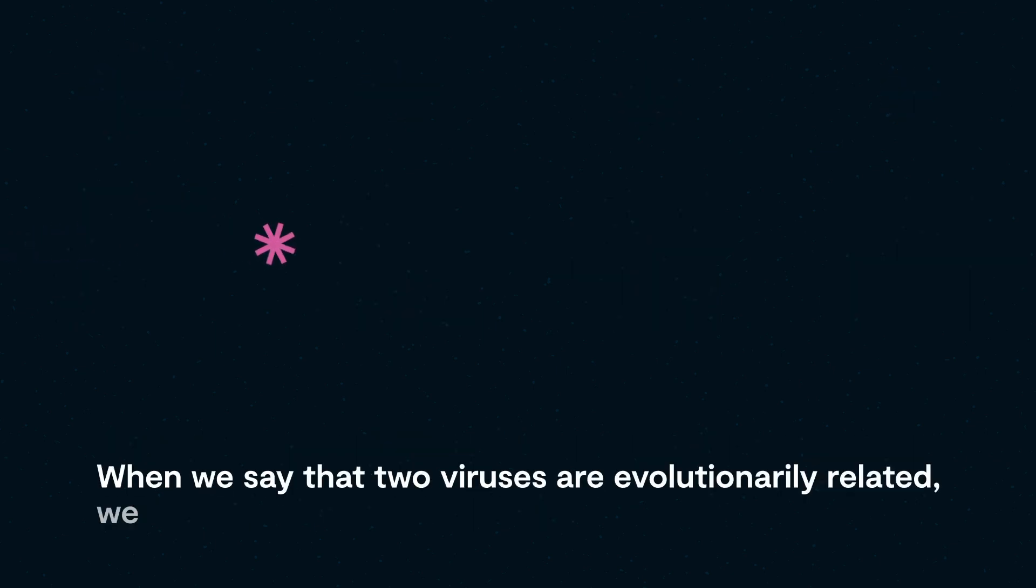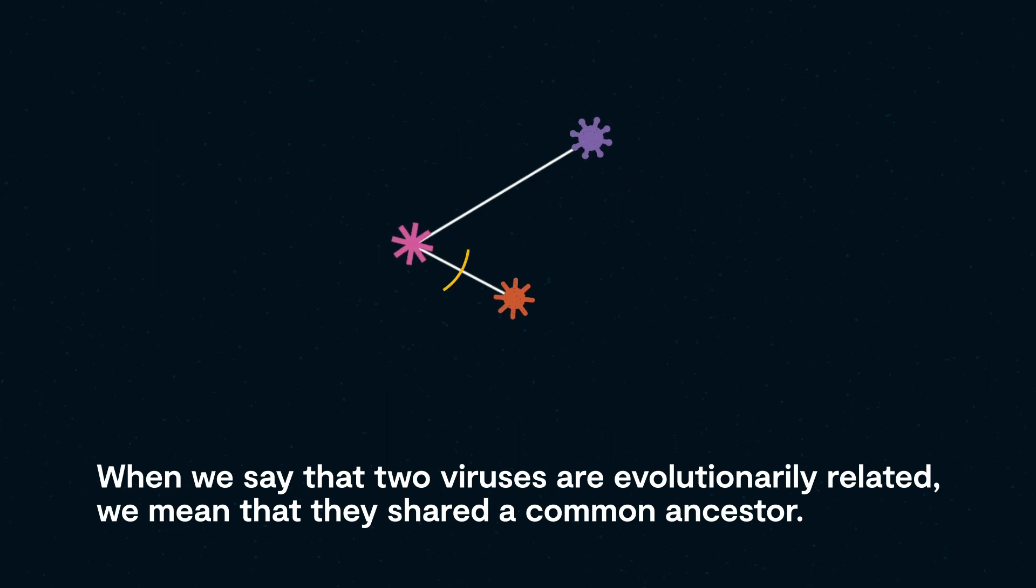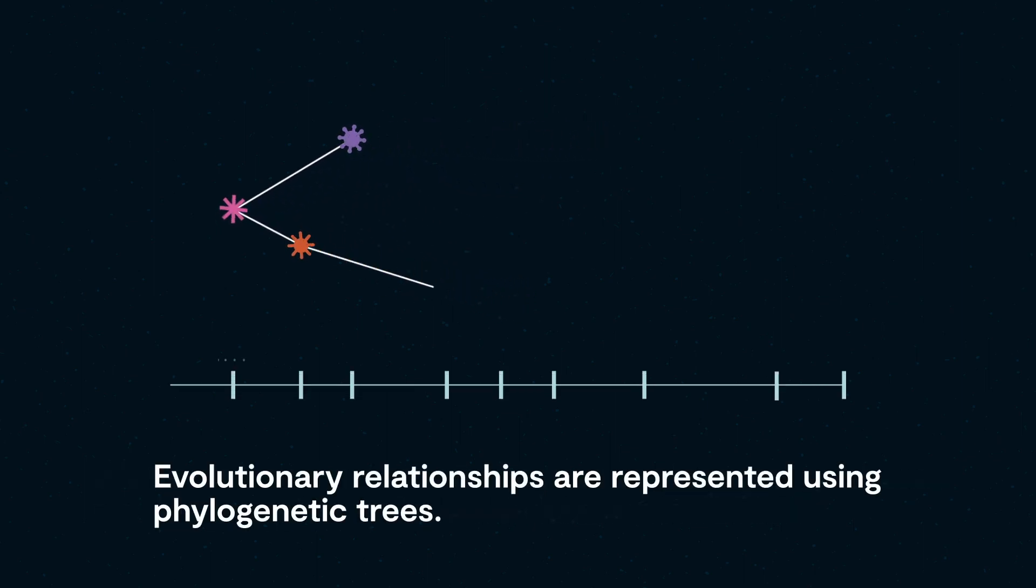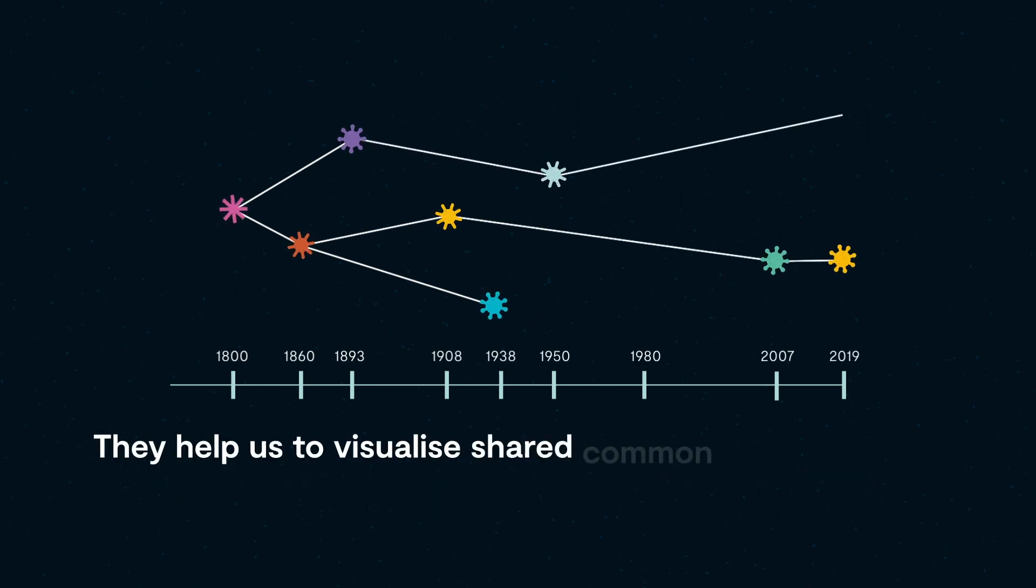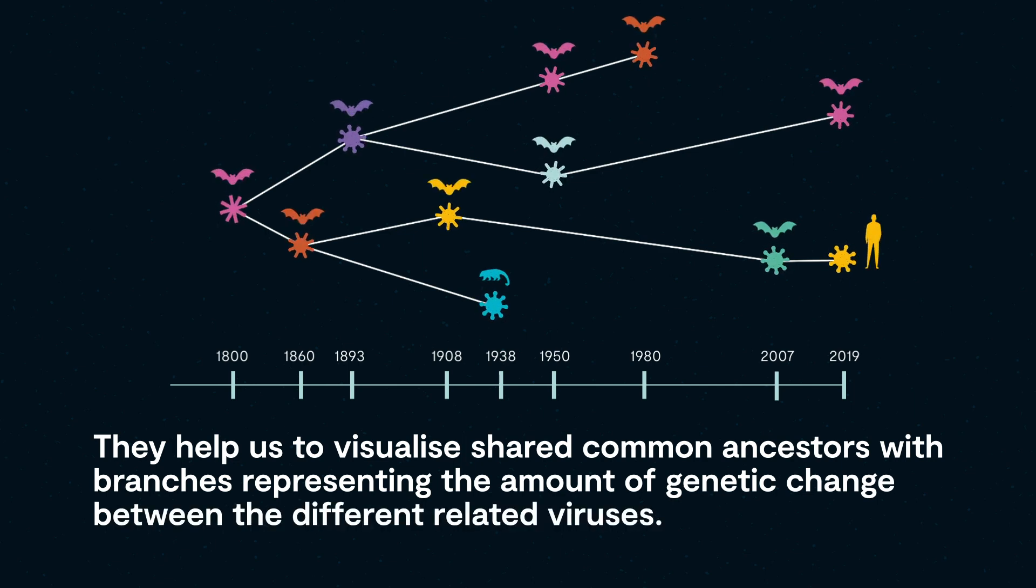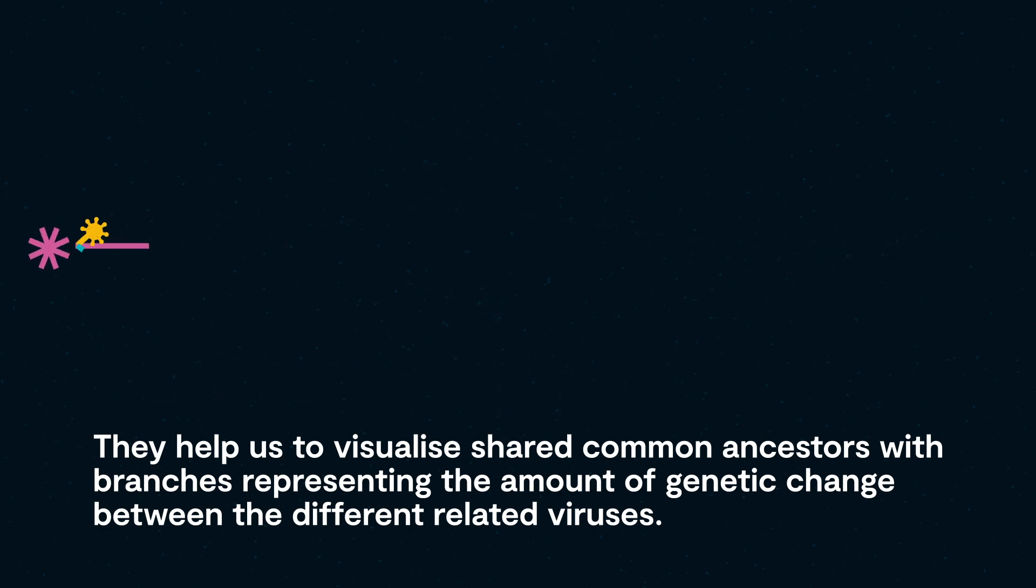When we say that two viruses are evolutionarily related, we mean that they shared a common ancestor. Evolutionary relationships are represented using phylogenetic trees. They help us to visualize shared common ancestors, with branches representing the amount of genetic change between the different related viruses.